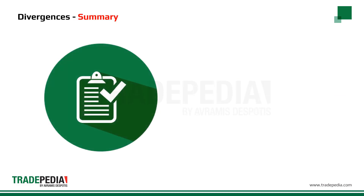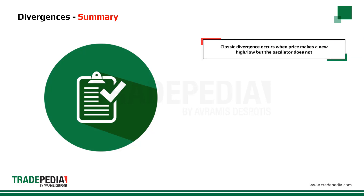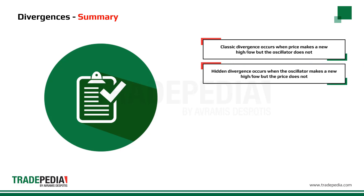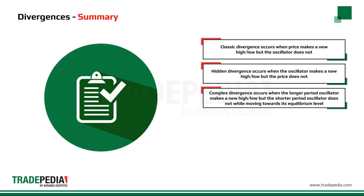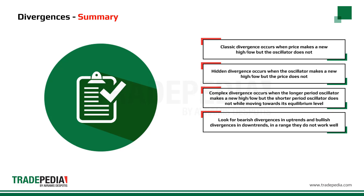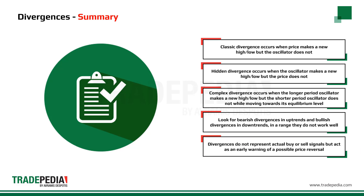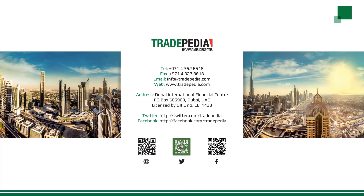Summary: Classic divergence occurs when price makes a new high or low but the oscillator does not. Hidden divergence occurs when the oscillator makes a new high or low but the price does not. Look for bearish divergences in an uptrend and bullish divergences in a downtrend, and be advised that divergences do not work well in a range. Divergences do not represent actual buy or sell signals, but act as an early warning of possible price reversal. In our next video, we will talk about volatility indicators. Thank you for watching.